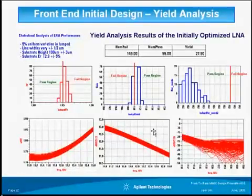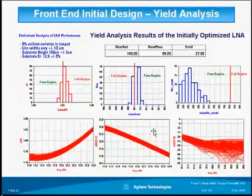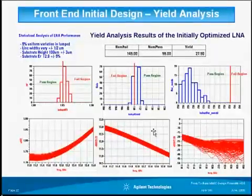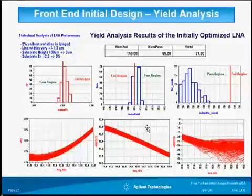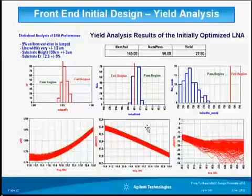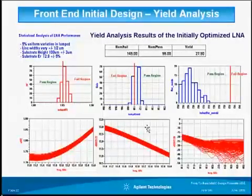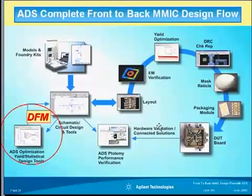The DFM toolset also includes a high-yielding impedance matching tool to find a robust matching network. Together, these tools transform any design into a robust, high-yielding design to ensure first-pass success at lowest cost.